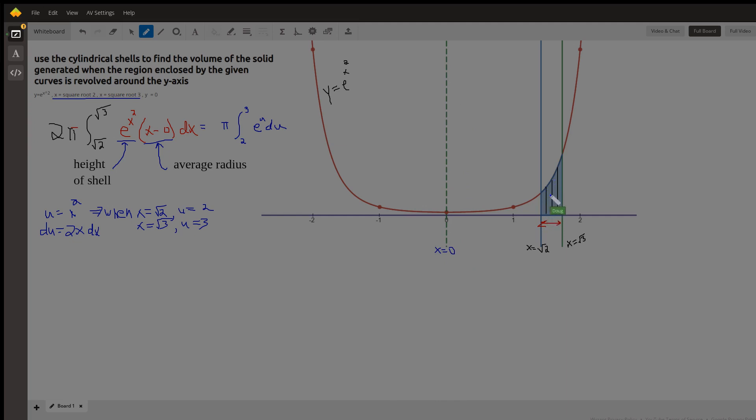So picture a typical shell as parallel to the axis of revolution. These are like three black, very thin shells. And the formula that you use, the definite integral that you set up is 2 pi times, these shells are occurring from the square root of 2 to the square root of 3.